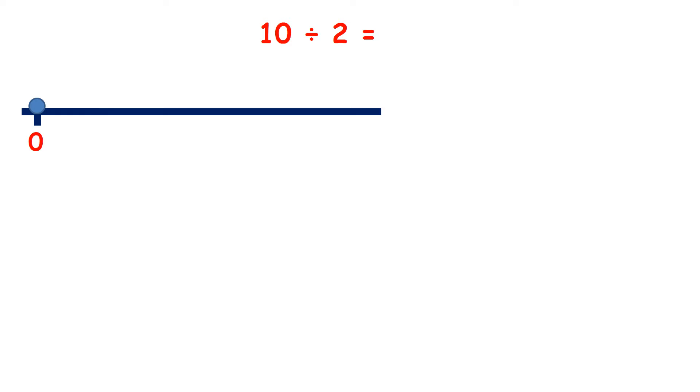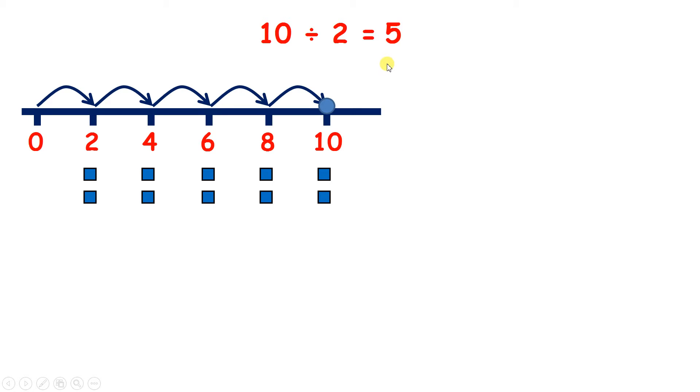Now we have 10 divided by 2. So again, let's count in steps of 2 until we get to 10: 2, 4, 6, 8, 10. So now we've got 5 groups of 2. So 10 divided by 2 is 5.